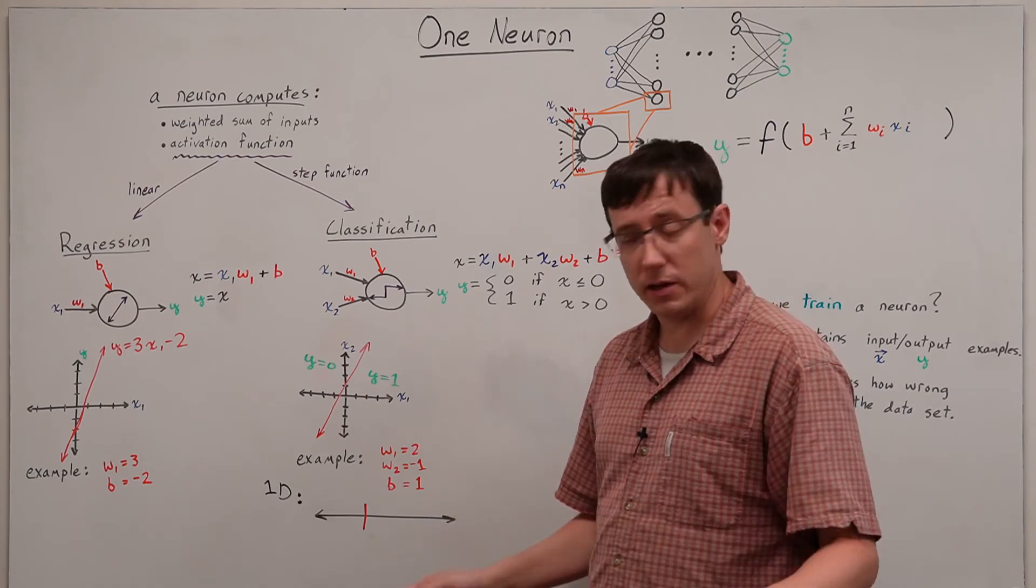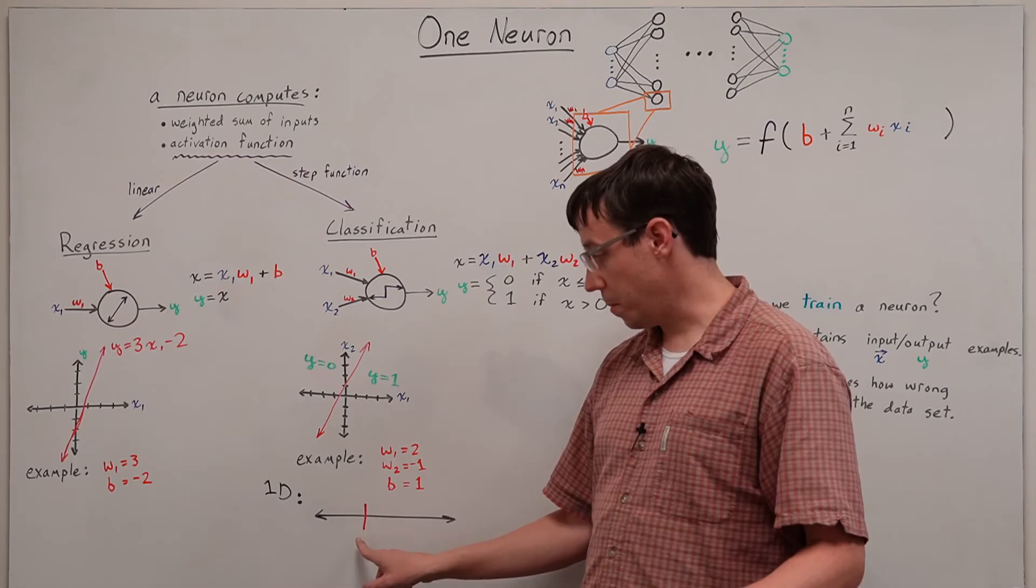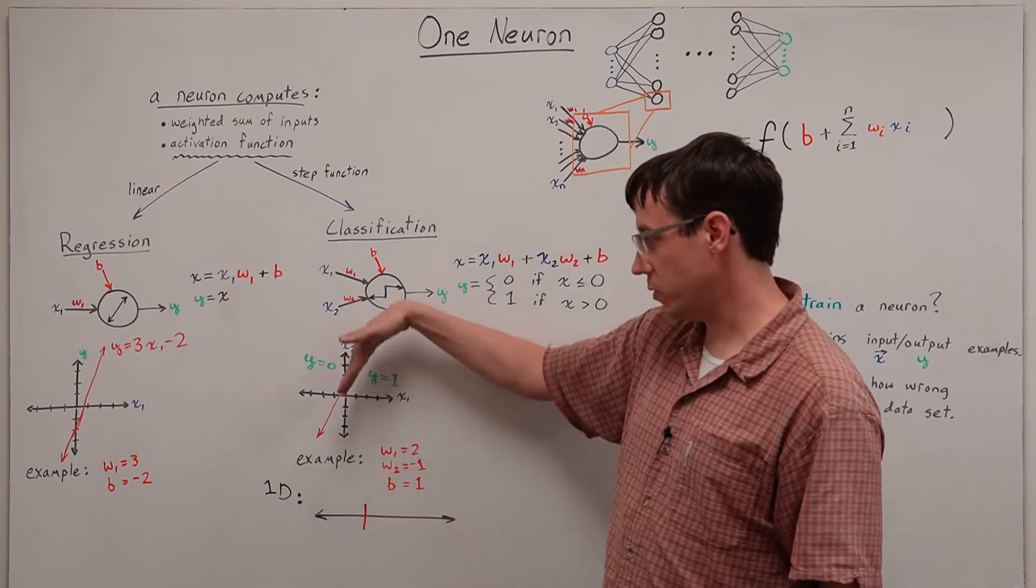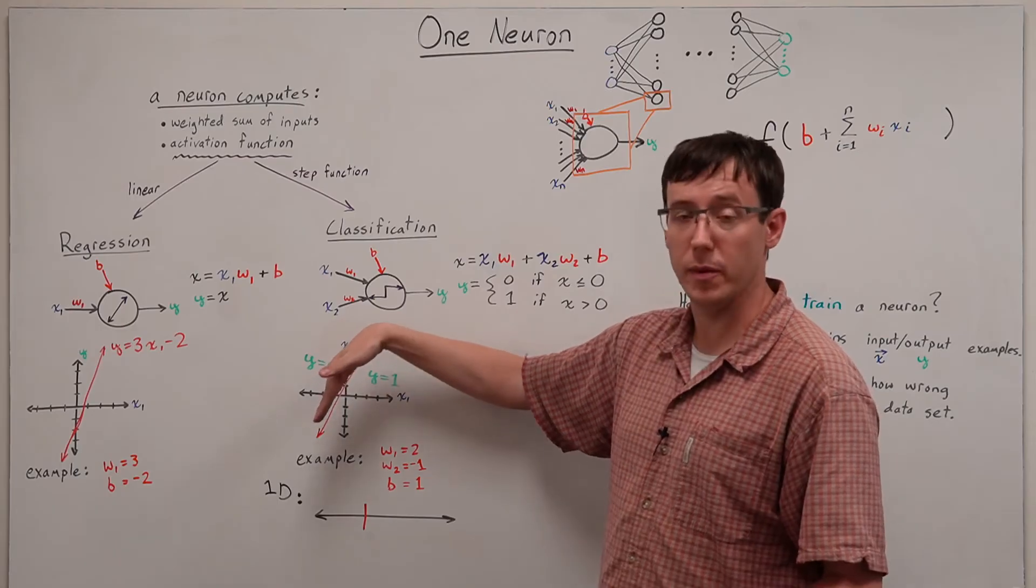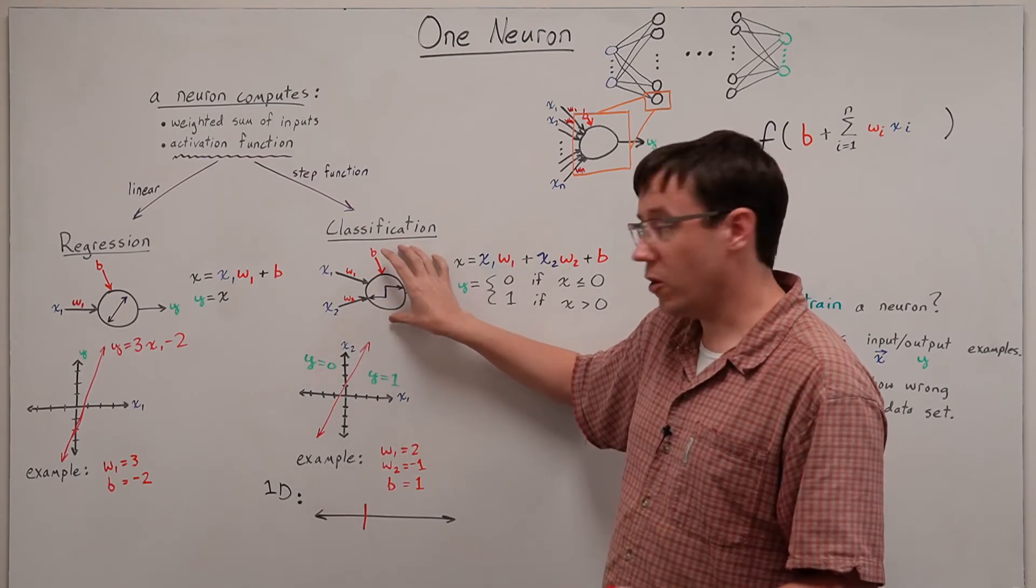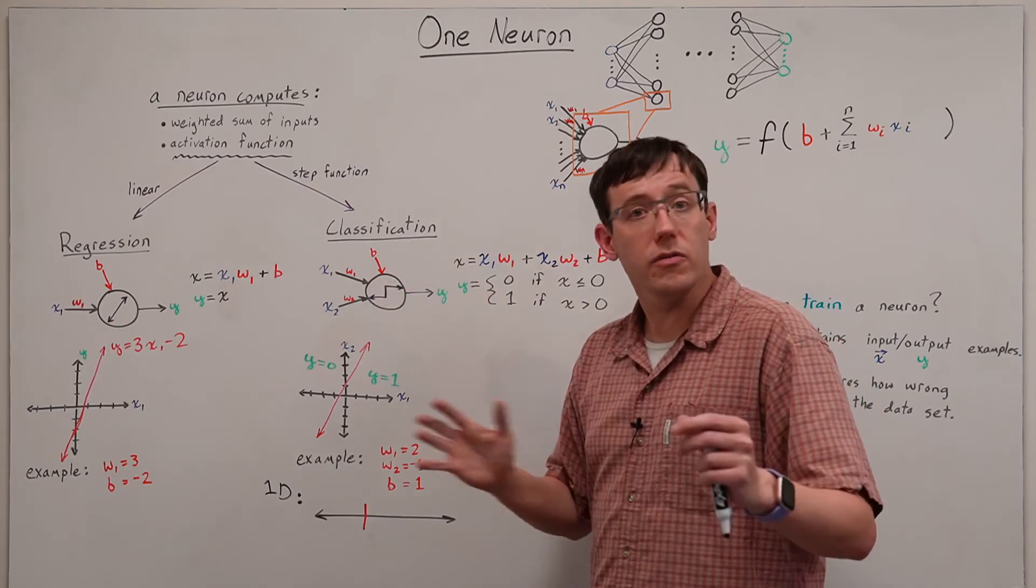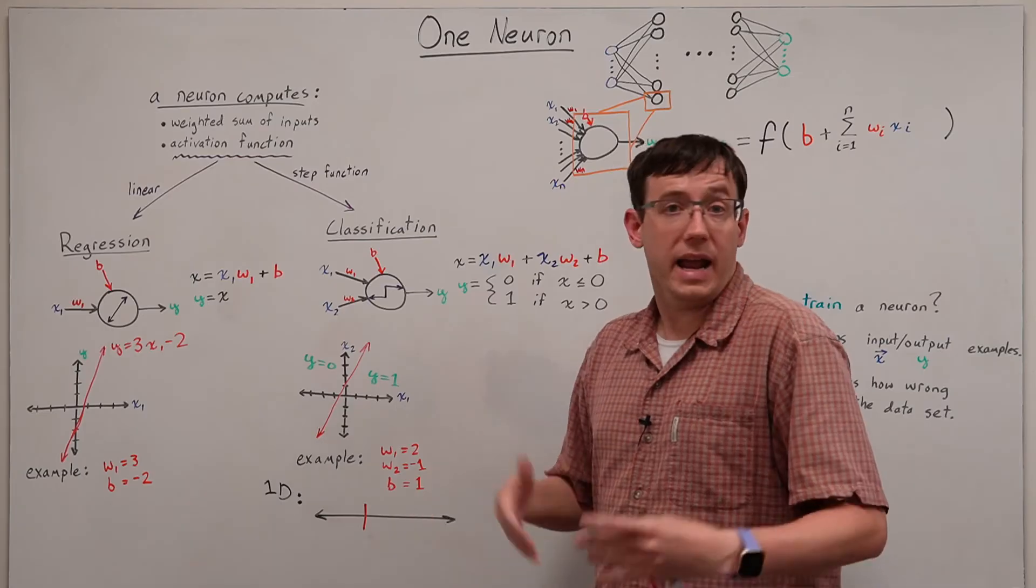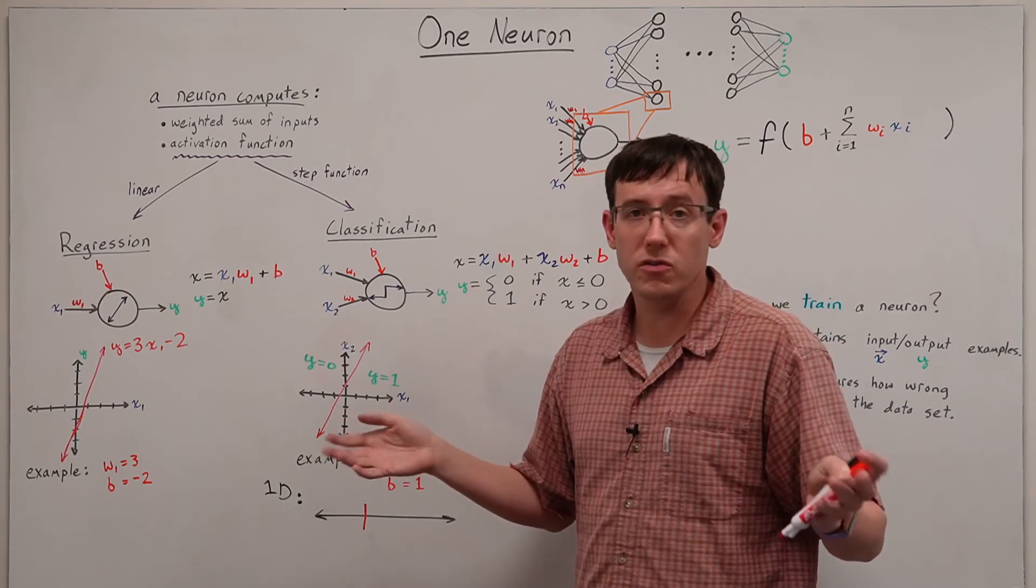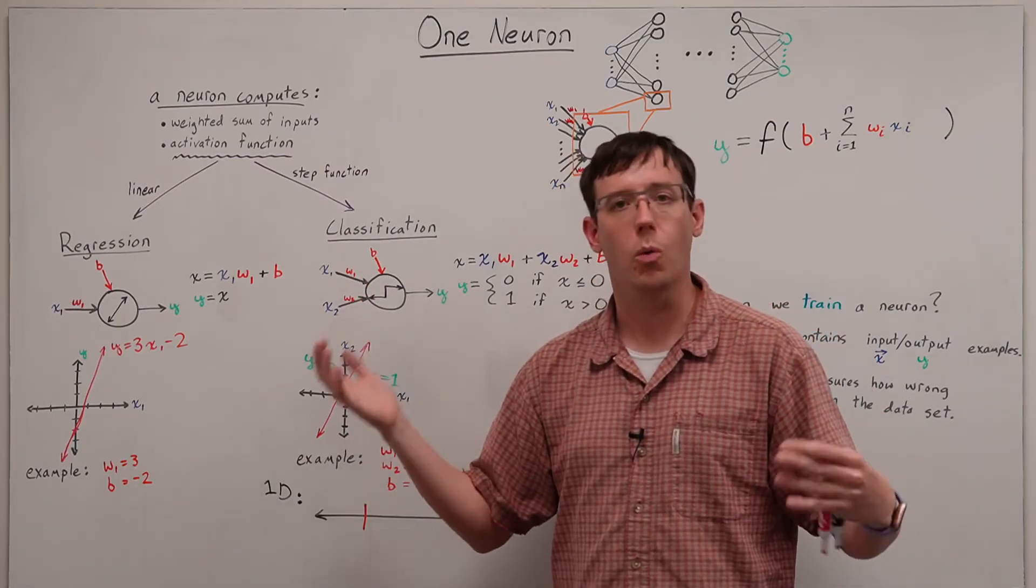Thinking about how this generalizes, with one-dimensional inputs we are specifying some point on a line. With two-dimensional inputs, we specify some line in the plane. If we had three inputs, then our classifier would be specifying some plane that divides 3D space. And in general, we can think of this sort of classifier as splitting n-dimensional space into the half where we output 0 and the half where we output 1.